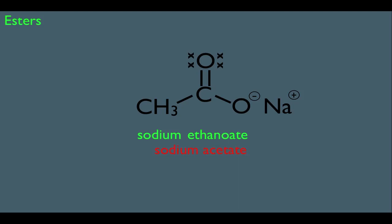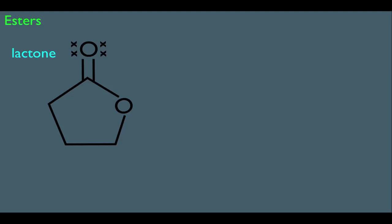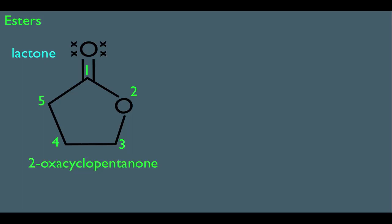There's a little more to naming esters, because sometimes you can have an ester that's actually within a ring. However, we wouldn't call this molecule an ester — we would call it a lactone. A lactone is simply an ester within a ring. You would name it 2-oxacyclopentanone. Notice how big the ring is: it's a 5-membered ring, so that's where 'cyclopentan' comes from — cyclo meaning ring, pentan meaning 5. We also have an '-one' ending, kind of like a ketone, and we could think of carbon 1 as kind of like a ketone group.